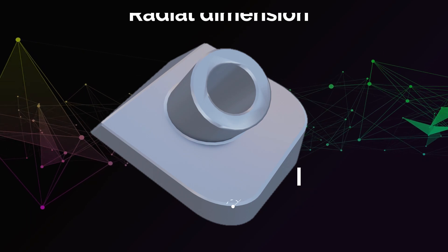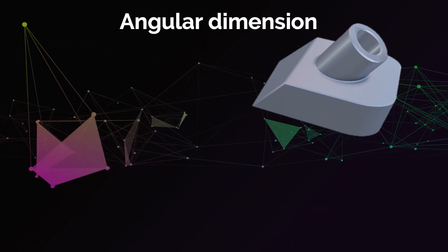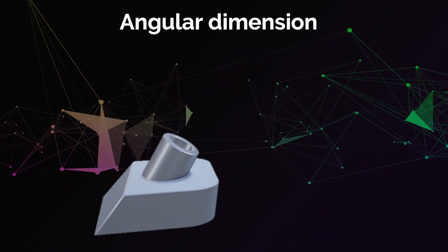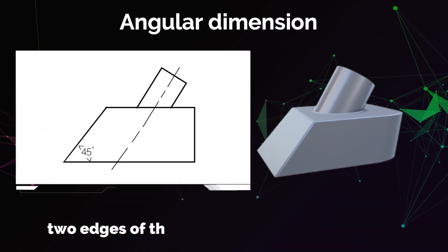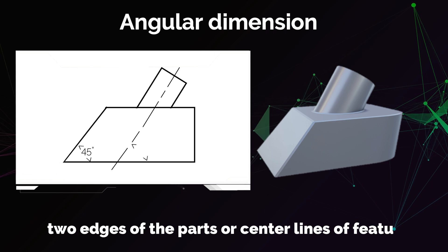One other type of dimension is the angular dimension. This type of dimension is used to specify the angle between two lines on the part. Again, these two lines can be two edges of the part, or they can be central lines of features.